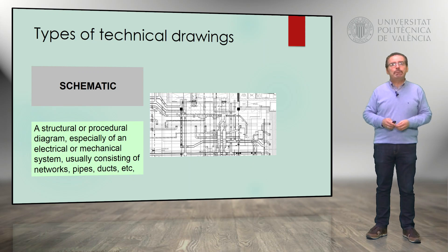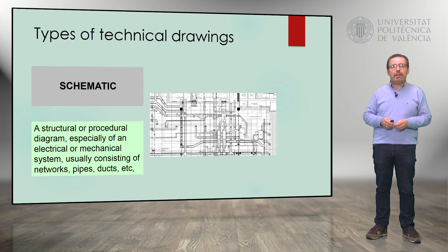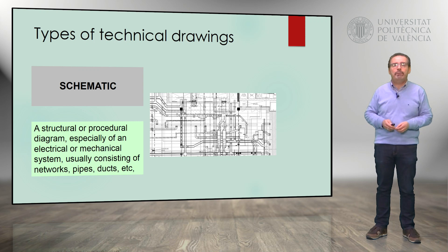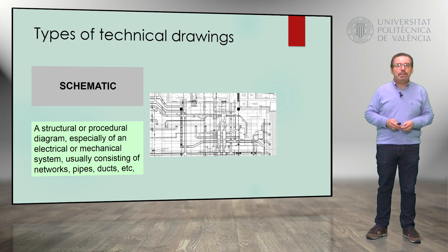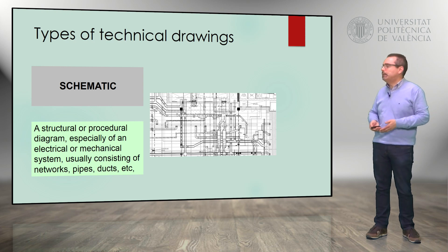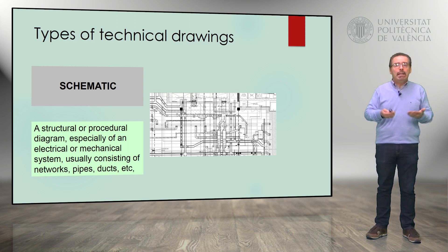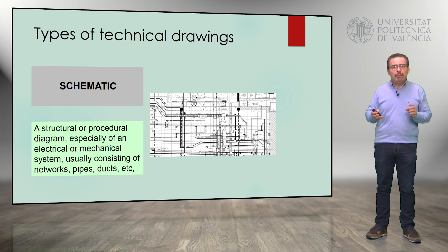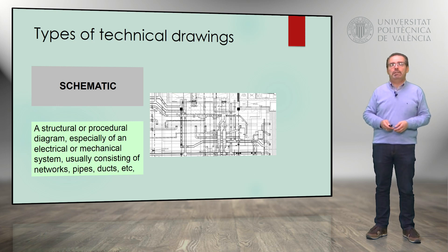A schematic is another specific type of technical drawing. In this case, we have a structural or procedural diagram, specifically of an electrical or mechanical system, usually consisting of networks, pipes, and ducts. A good example would be electrical or hydraulic installations.